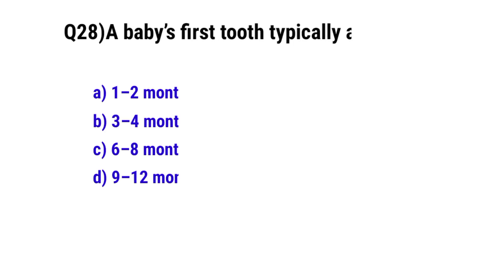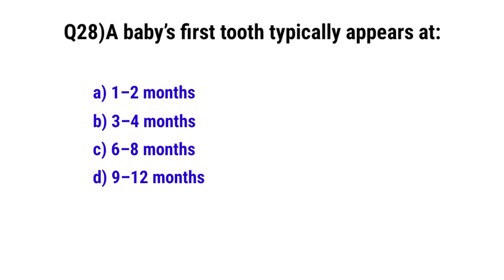Question number twenty-eight: Complementary feeding should be introduced at. The correct option is C, 6 to 8 months.